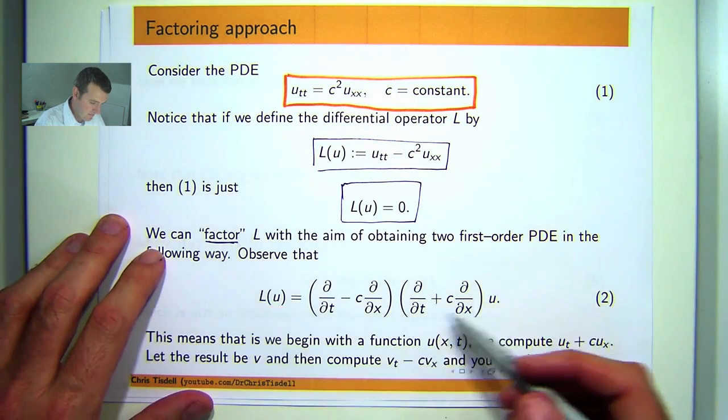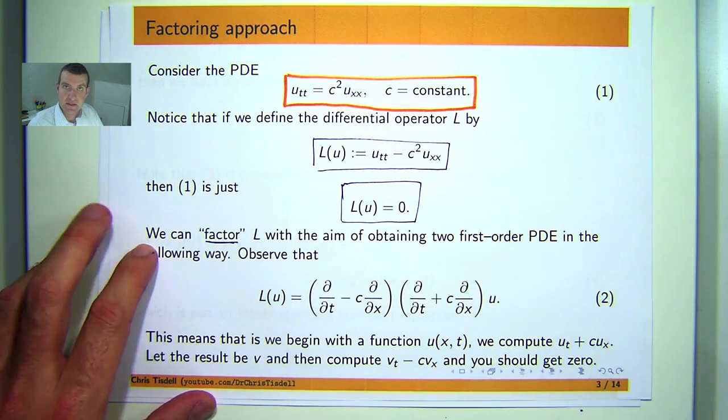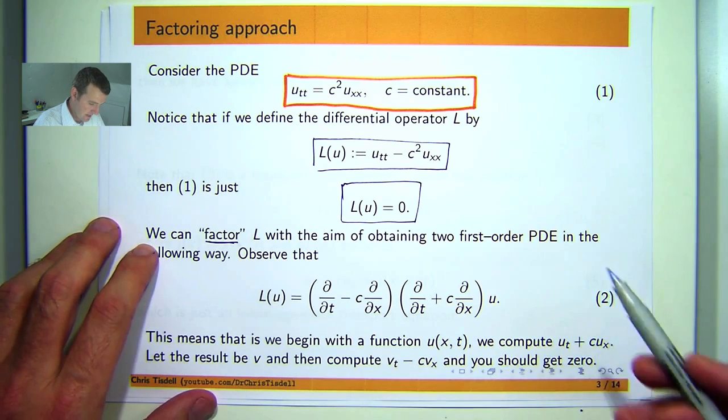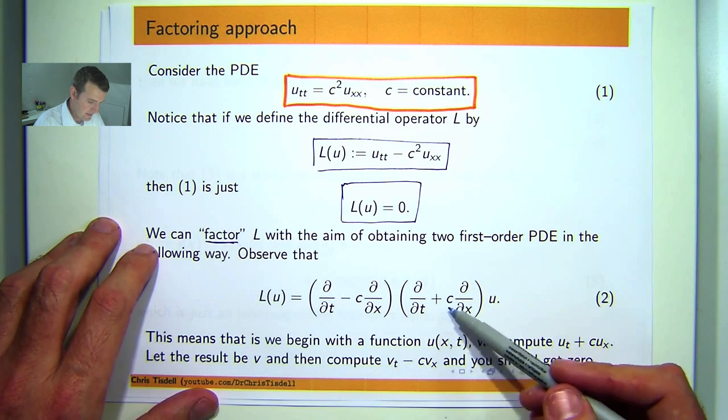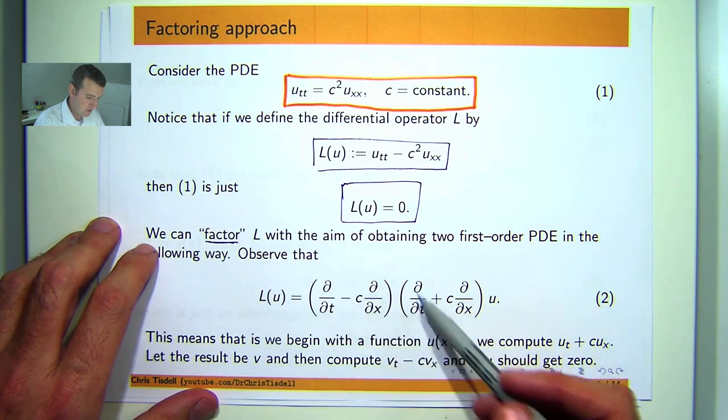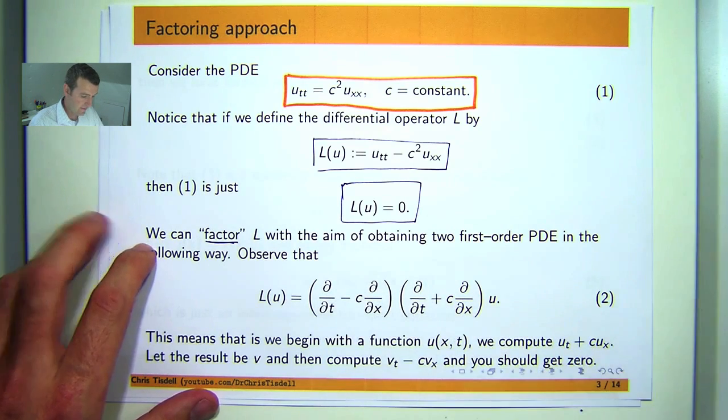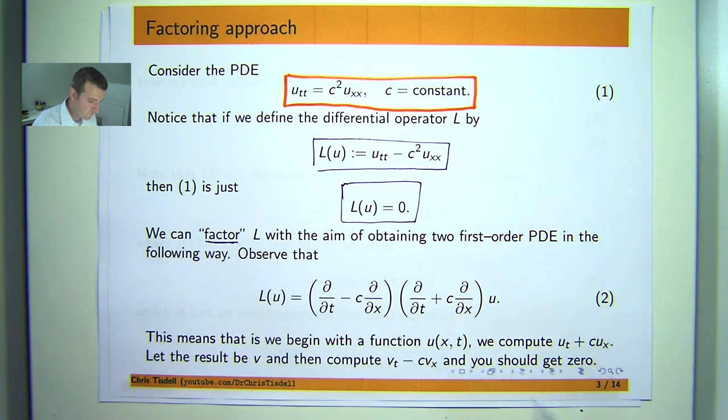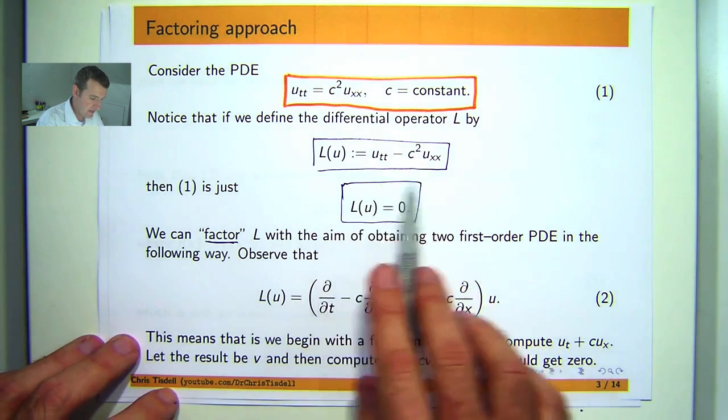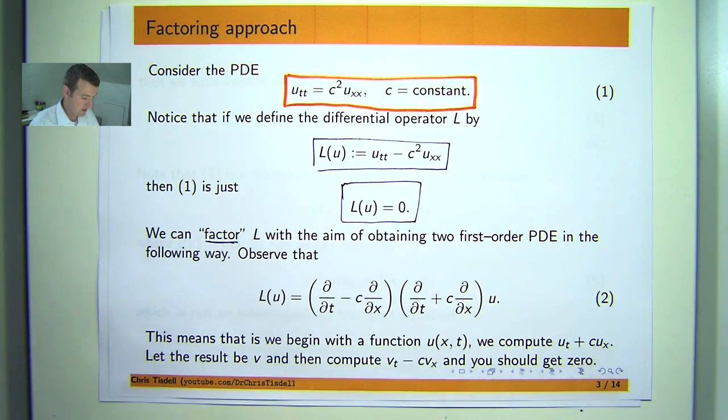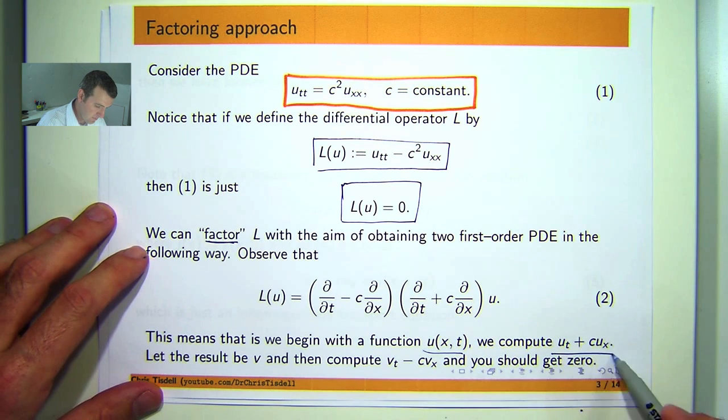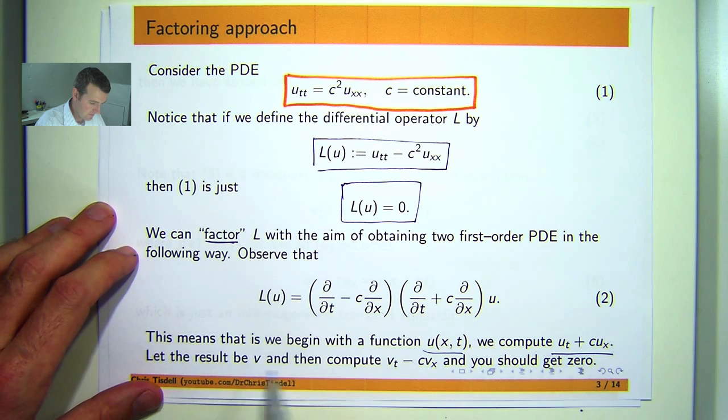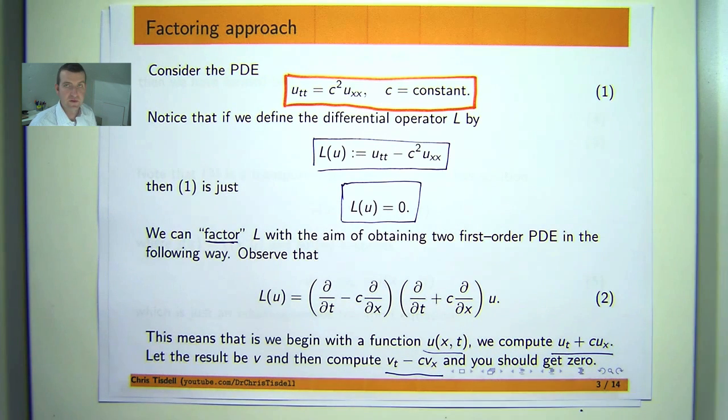Let me talk a bit about that. If you expand these brackets, essentially compute ∂u/∂t and then c times ∂u/∂x and then apply the derivatives from this bracket to what you have here, you'll verify that you'll get this. So just as an exercise you can verify. Essentially begin with the function u, compute these derivatives, let the result be v and then compute this and you should get zero for L(u) equals zero.